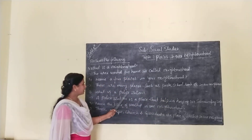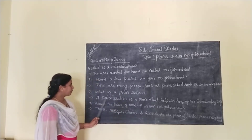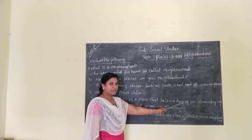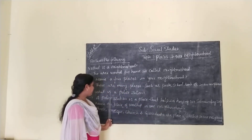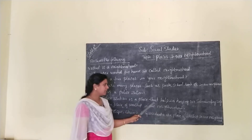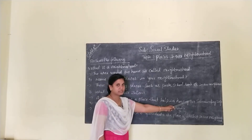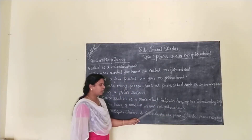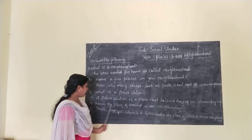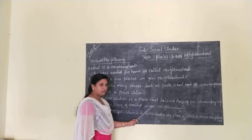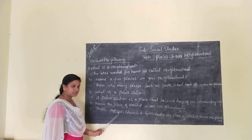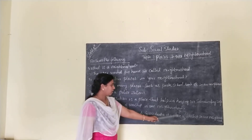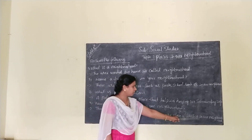What is a police station? A police station is a place that helps in keeping our surroundings safe. Name the places of worship in our neighborhood. Temple, mosque, church, and gurudwara are places of worship in our neighborhood.